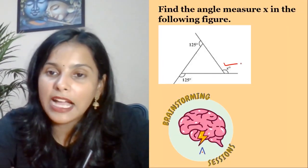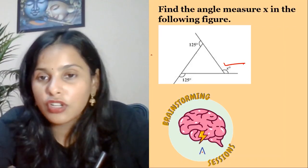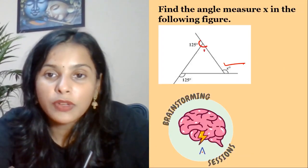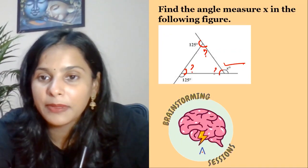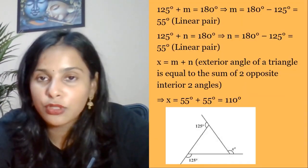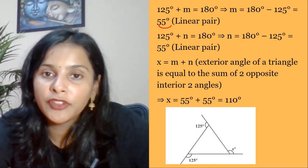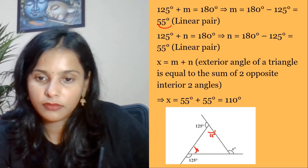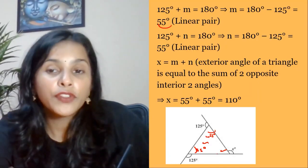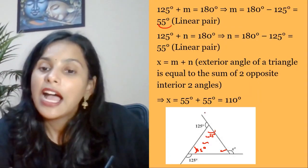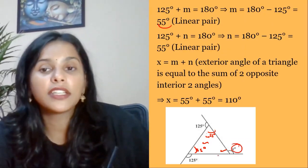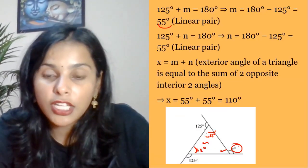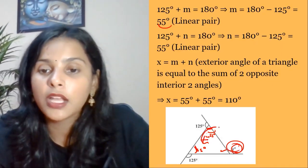Next question: find the value of x. Nothing complicated here — take it easy. We know a linear pair is formed here, so we find that value. Linear pairs are formed at multiple points. The first value is 55. So 55 plus 55 equals 110. Therefore x equals 110 degrees, because the exterior angle of a triangle is equal to the sum of the two opposite interior angles.